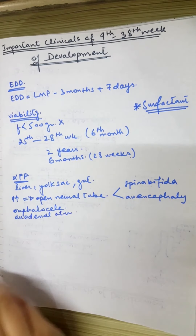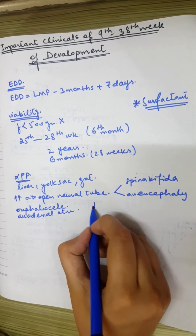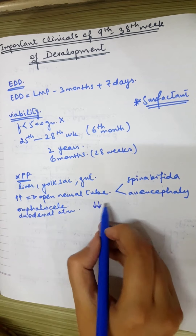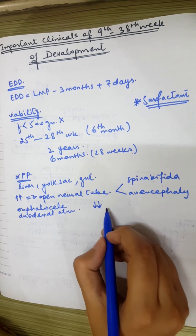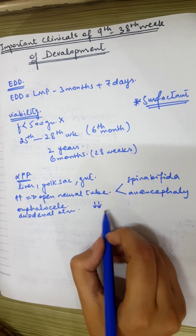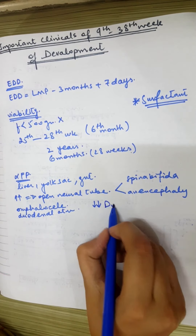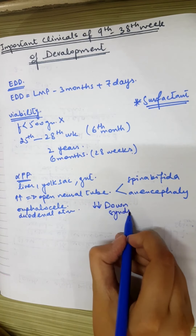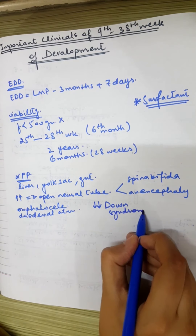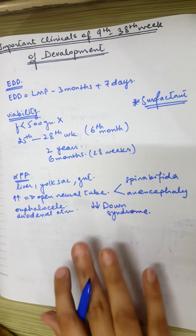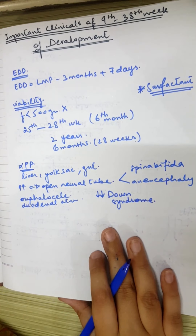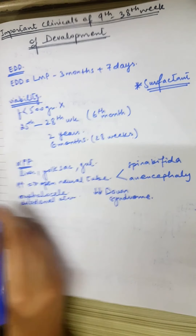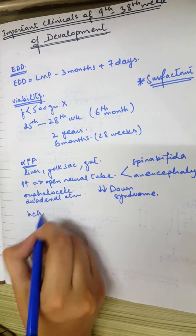If Alpha-Fetoprotein is less than the normal range, it indicates Down syndrome. So Down syndrome can also be detected on the basis of low Alpha-Fetoprotein levels. Next is HCG.